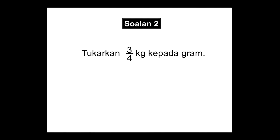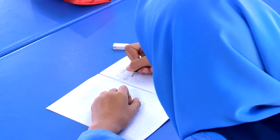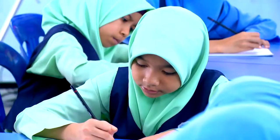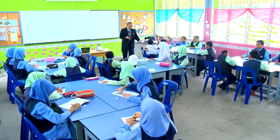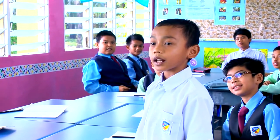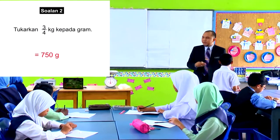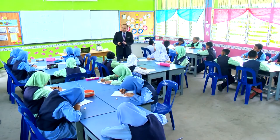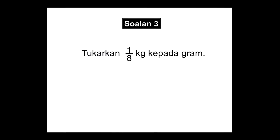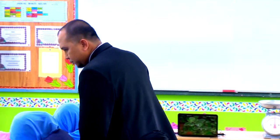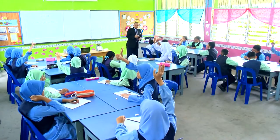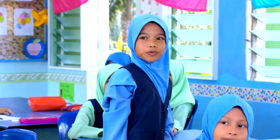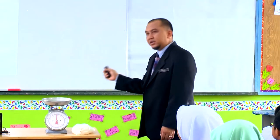Cuba tengok soalan yang kedua. Tukarkan 3 per 4 kilogram kepada gram. Siapa yang selesai? Farish, 750 gram cikgu. Bagus Farish, 750 gram, tepat jawapan kamu. Sedia untuk soalan yang ketiga? Tukarkan 1 per 8 kilogram kepada gram. Siapa yang dapat jawapan? Kita minta Azlina cuba bagi jawapan. 125 gram cikgu. Bagus, 125 gram, tepat jawapannya.